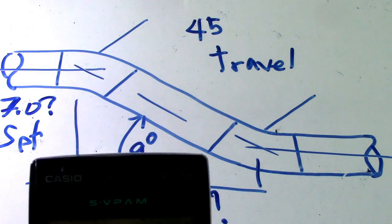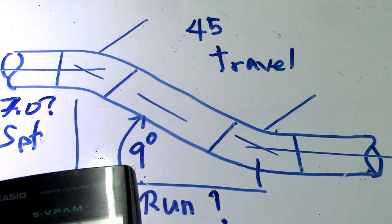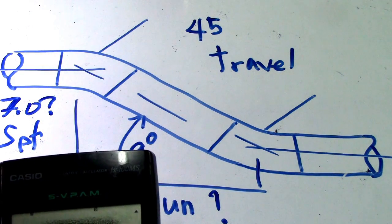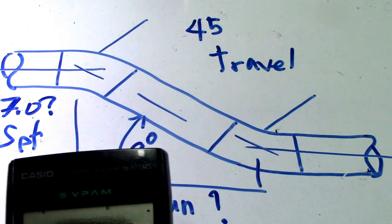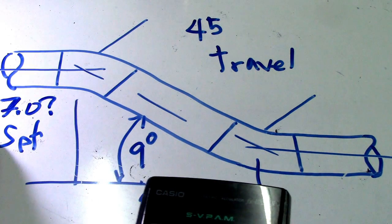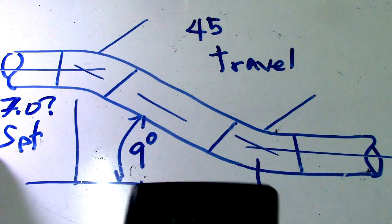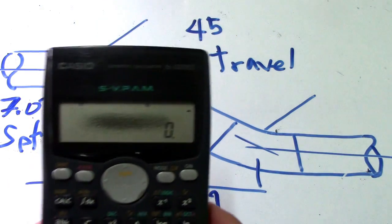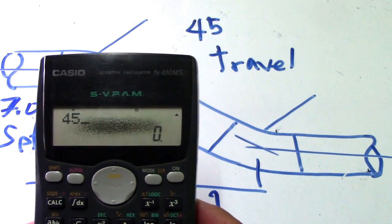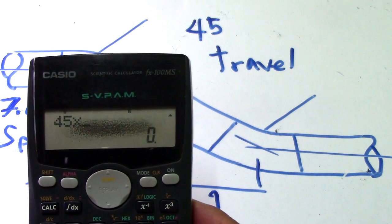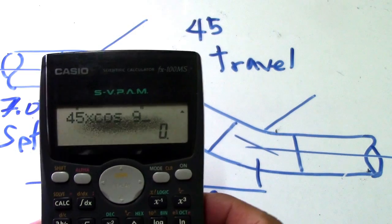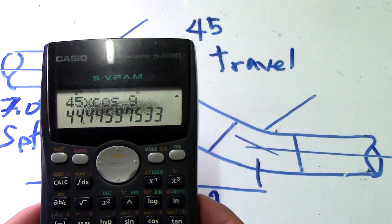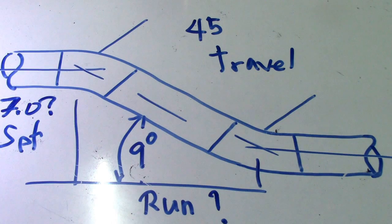Next we will compute the run. To find run, use travel again but change sine to cosine. If the question is set, use sine; if the question is run, use cosine. So 45 multiplied by cosine 9 degrees — the answer is 44.4.